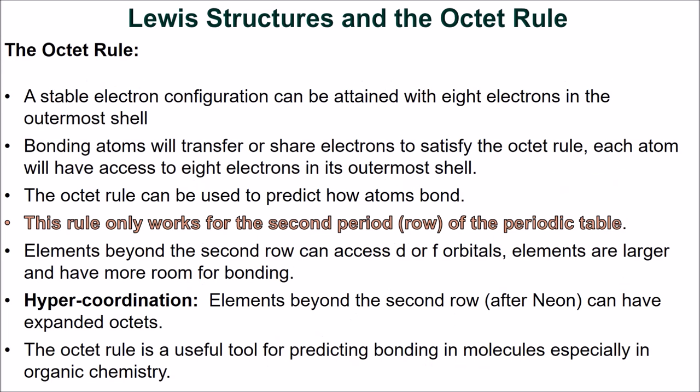It is important to realize that the octet rule only works for the second row of the periodic table. Elements beyond the second row have access to d or f orbitals, are larger, and have more room for bonding. This means that elements beyond the second row — after neon — can have expanded octets, which is referred to as hypercoordination. Despite its limitations, the octet rule remains a useful tool for predicting bonding in simple molecules.